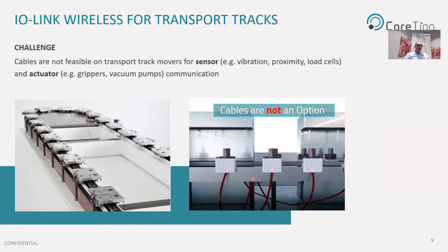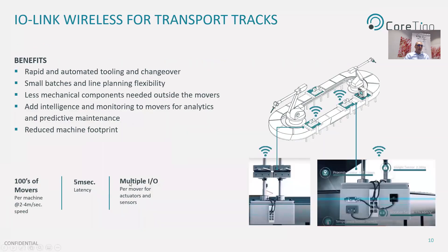This is simply not feasible with cables on these fast-moving transport systems that typically move at speeds of 2 to 4 meters per second. In the same manner that power is provided to movers through inductive power without contact or cables, communication also has to be done without any contact. IO-Link Wireless provides the perfect solution — designed for low latency of 5 milliseconds with synchronization rates between movers of a few microseconds, cable-grade reliability a million times better than traditional wireless networks, and the scalability to support hundreds of wireless movers with actuators and sensors in a single machine area at high speeds.